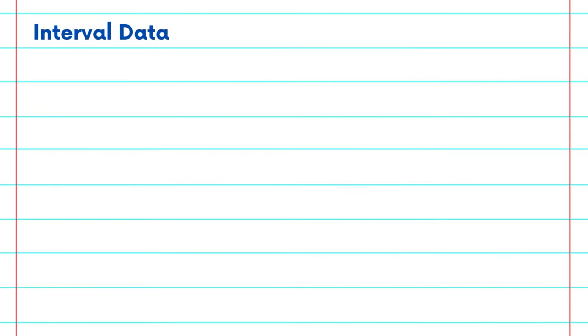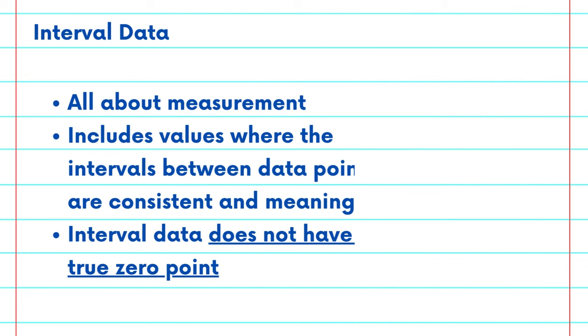Let's start with interval data. This type of data is all about measurement but it has some unique characteristics. Interval data includes values where intervals between data points are consistent and meaningful.